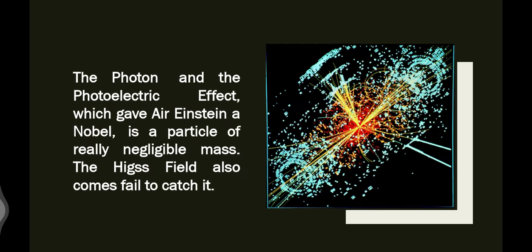Now comes photon and photoelectric effect, which gave Sir Albert Einstein a Nobel Prize. A photon is a particle of really negligible mass. In physics we discuss about negligible mass in various types of calculations—we say this is negligible mass, this is negligible value, etc. But photon is really negligible value. Photon is the unit particle made to make light. Light is made of photons.